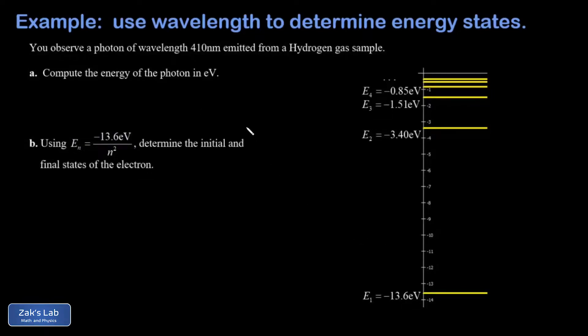In this problem, we start with the observation of a 410 nanometer photon emitted from a hydrogen gas sample. In part A, we want to find the energy of this photon. And then in part B, we're going to figure out what the electron transition was that caused the emission of this photon.